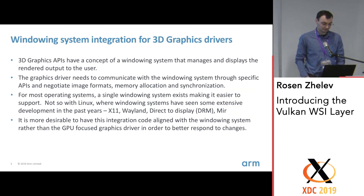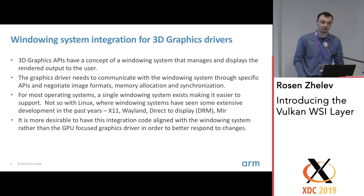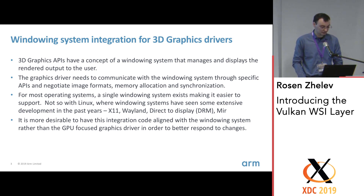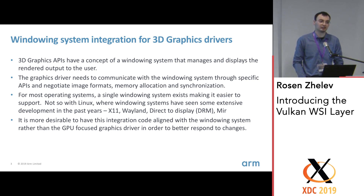3D graphics drivers and windowing systems: most 3D graphics APIs have a concept of a windowing system that manages the rendered output and presents it to the user. There is negotiation with windowing system-specific APIs between the graphics driver to synchronize and allocate appropriate memory. For most operating systems there is only one windowing system, but for Linux it's more complicated — we have a lot of different choices, and there have been quite a lot of developments in the past years. It's generally desirable to have that part of the GPU driver more closely aligned with the windowing system, as changes to that code are mostly in response to changes in the windowing system, as opposed to the core rendering driver that handles new hardware and the actual GPU.